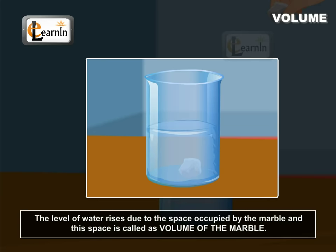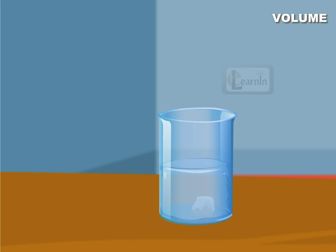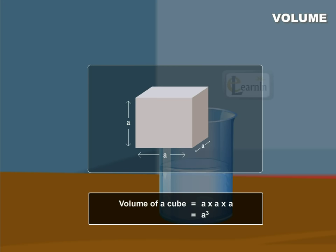In a similar manner, the volume of several objects can be found. For example, volume of a cube is equal to A into A into A which is equal to A cube.